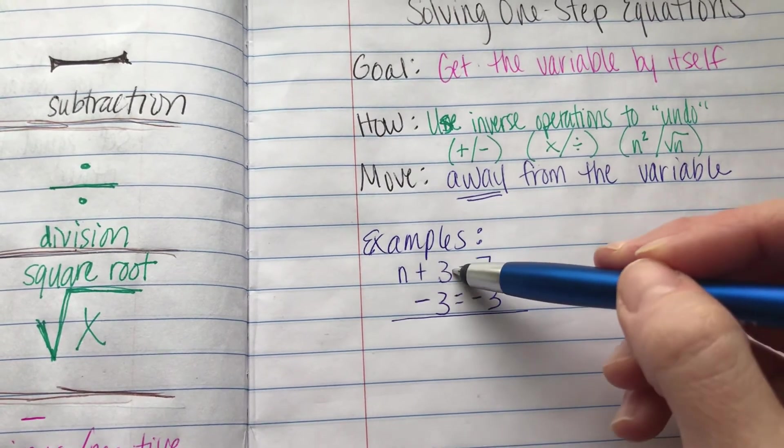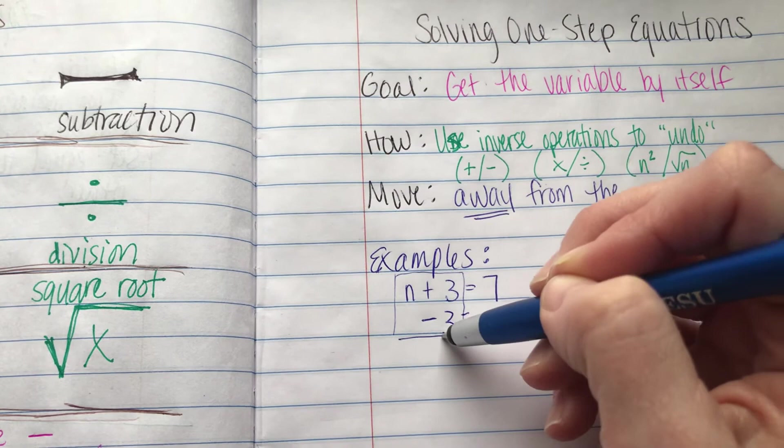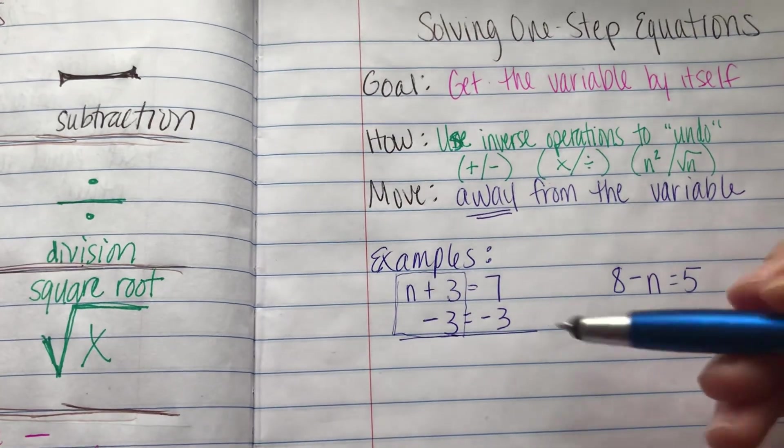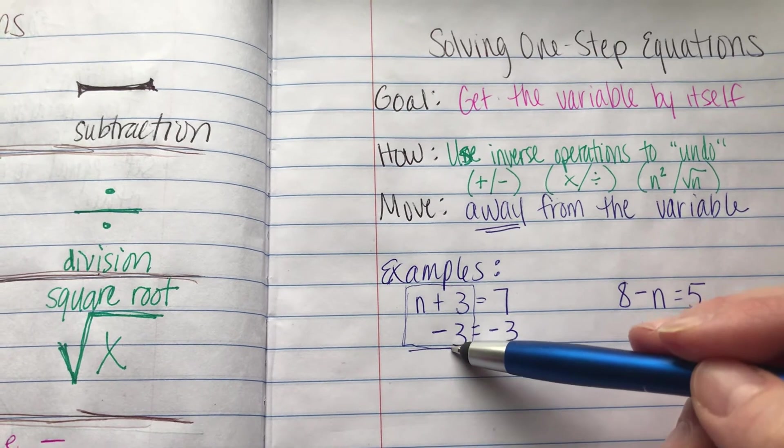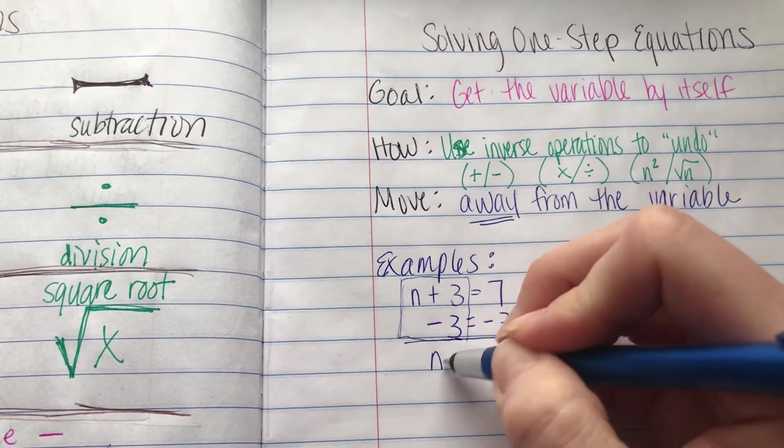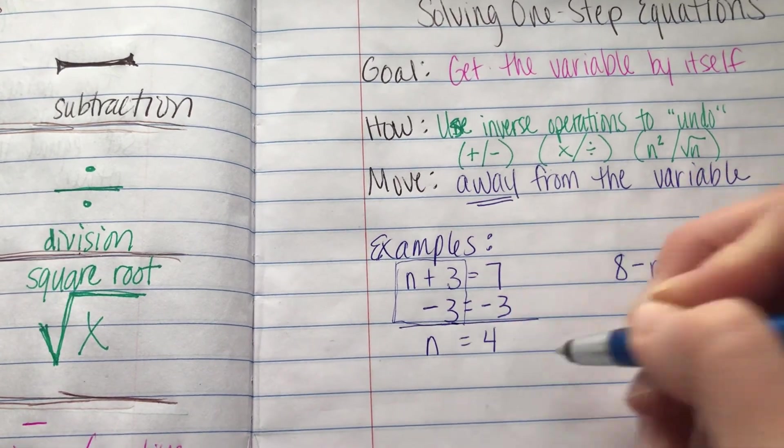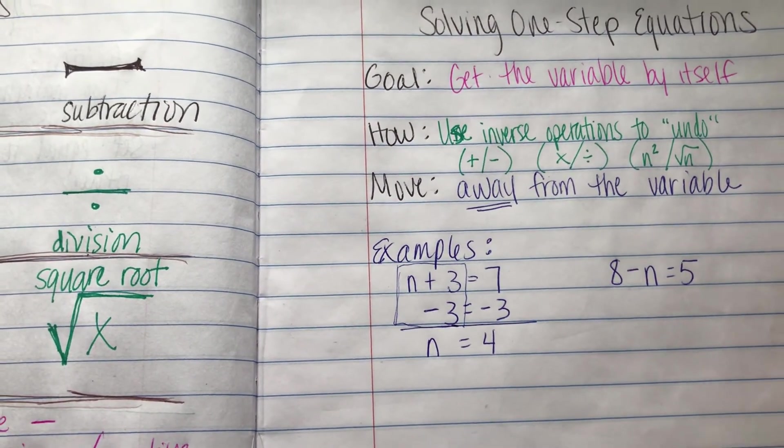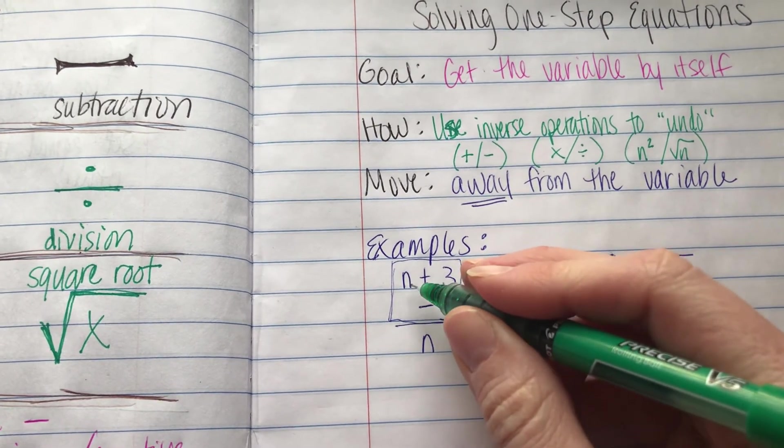So n plus 3 minus 3. This all becomes like one expression here. The plus 3 and the minus 3 cancel each other out. They equal 0. And you get just plain old n. And over here, 7 minus 3 equals 4. So n equals 4.